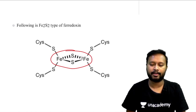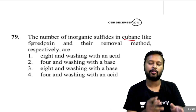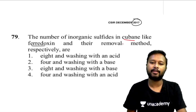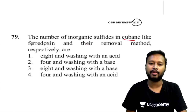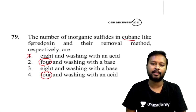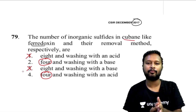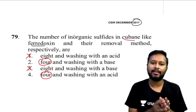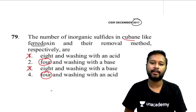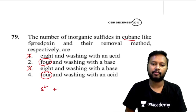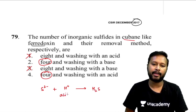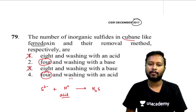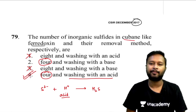Getting back to the question: how many inorganic sulfides are in the cubane-like ferrodoxin? Obviously four sulfides — so you cancel options 1 and 3. For the removal method, the sulfide ions react with H⁺ ions to give H₂S, so you need an acid. Therefore the removal method is by washing with an acid, making option 4 correct.